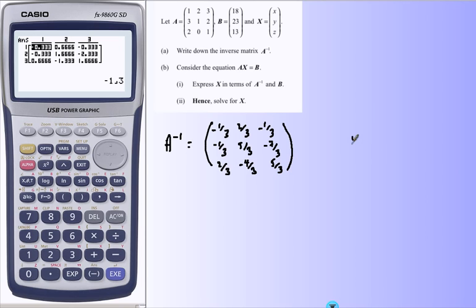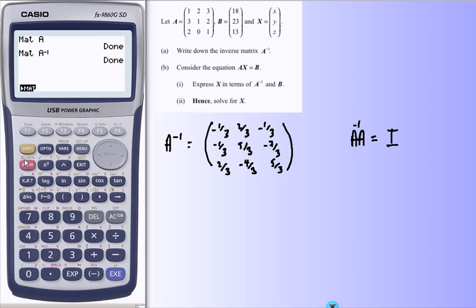And to check this inverse, what I can do here is if I do the inverse multiplied by the matrix itself, what I should get is I should always get my identity. And although I can be reasonably sure that's going to happen, I'm just going to show how to do that.